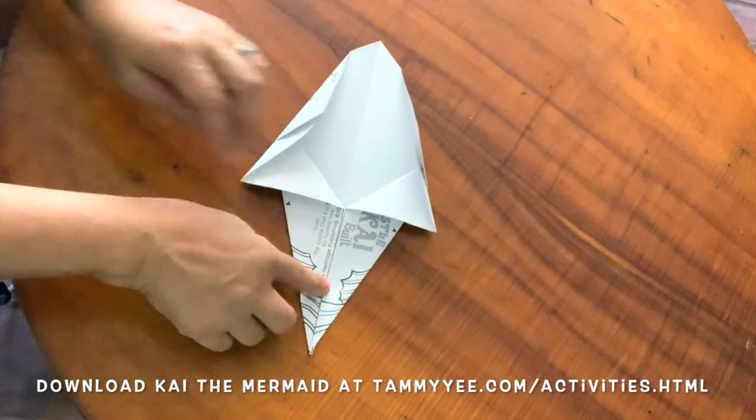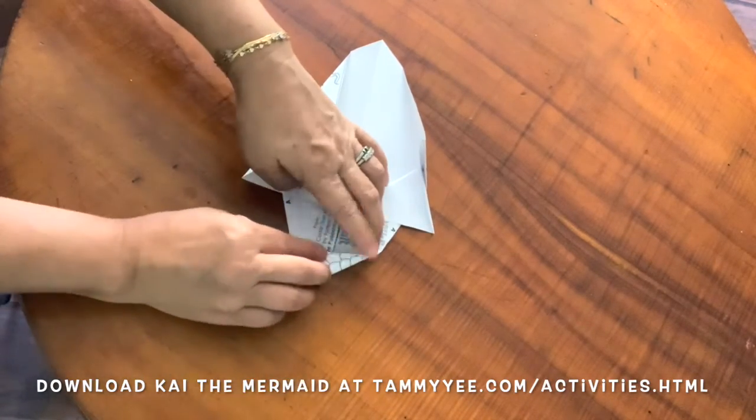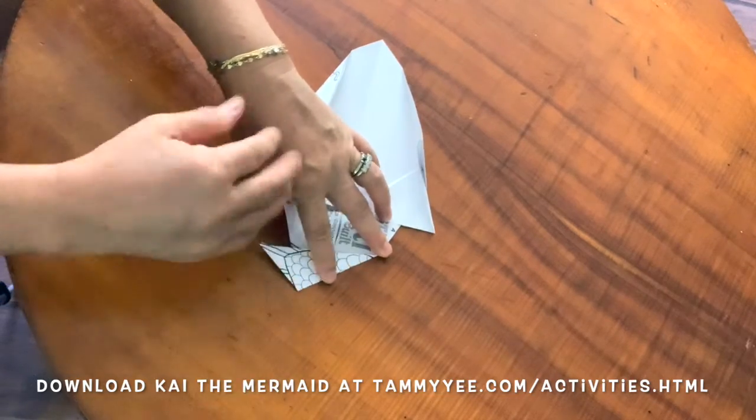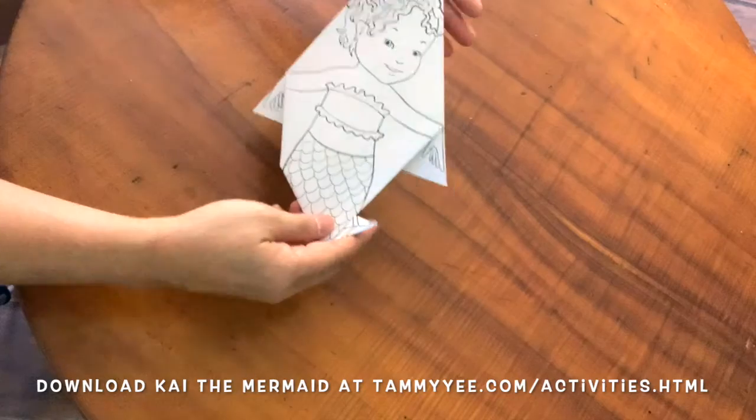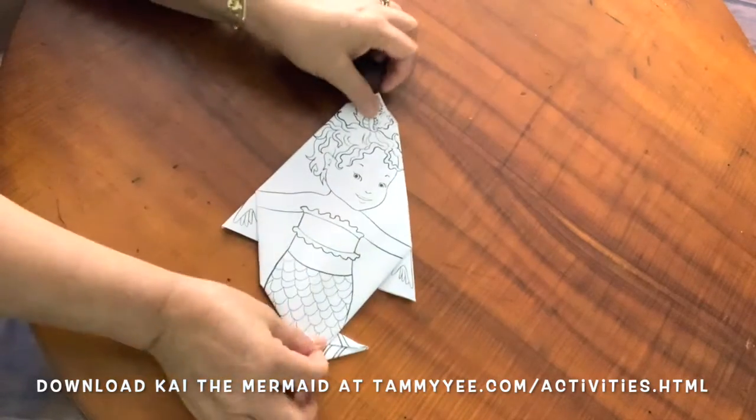Now the last step is to fold her tail. It's just to create a nice bend in her tail. You can fold it right or left, it doesn't matter. Okay, let's turn her over. And there's Kai the mermaid.